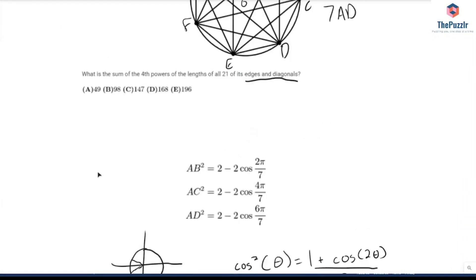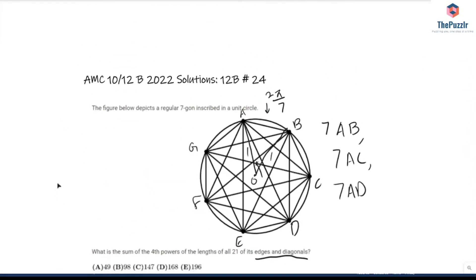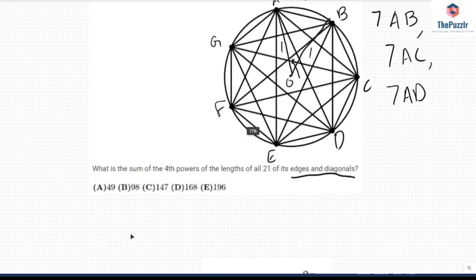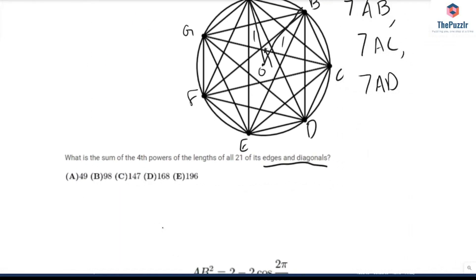Now, going back to the answer choices, we would multiply, like we said, 21 times 7, which would be 147, and we would be done. Now, for this problem,